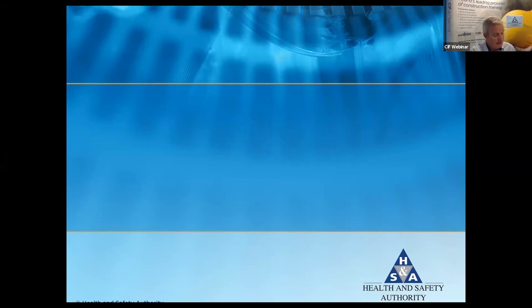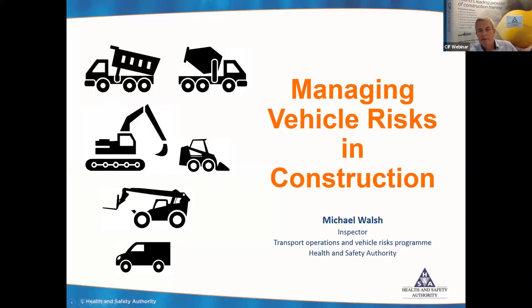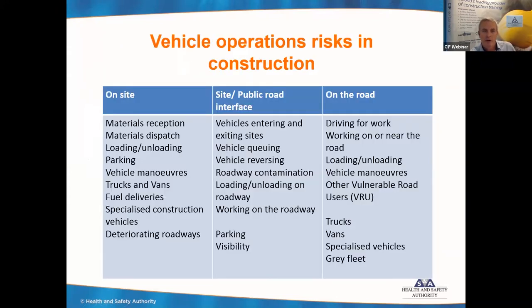My name is Michael Walsh from the Health and Safety Authority. I'm attached to the Transport Operations and Vehicle Risks program. We're delighted that vehicle risks have been identified as one of the themes for construction safety week and we have this opportunity to highlight vehicle safety in construction. The title of today's seminar is Managing Vehicle Risks in Construction and I'm going to look at this on a three-pronged approach: vehicles on the sites themselves, the interface between the site and the public road, and then construction vehicles on the public road.